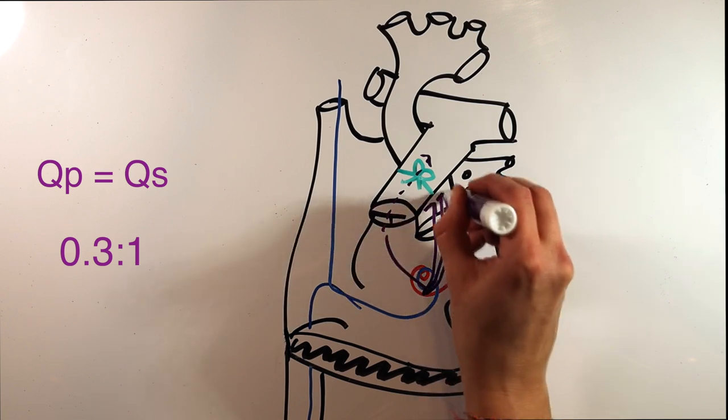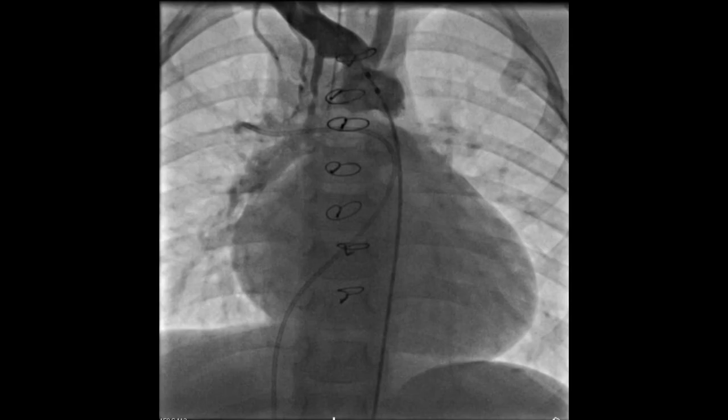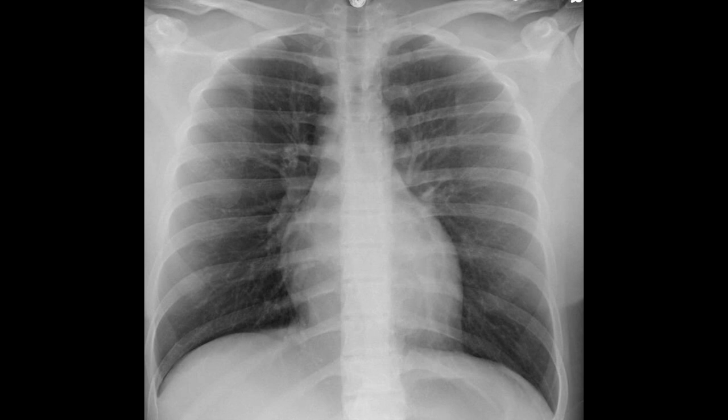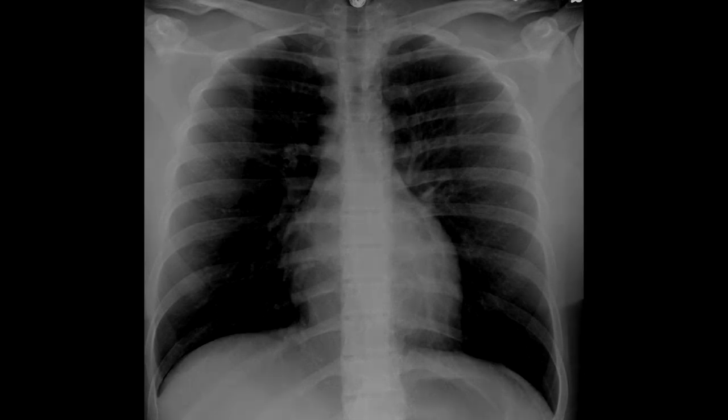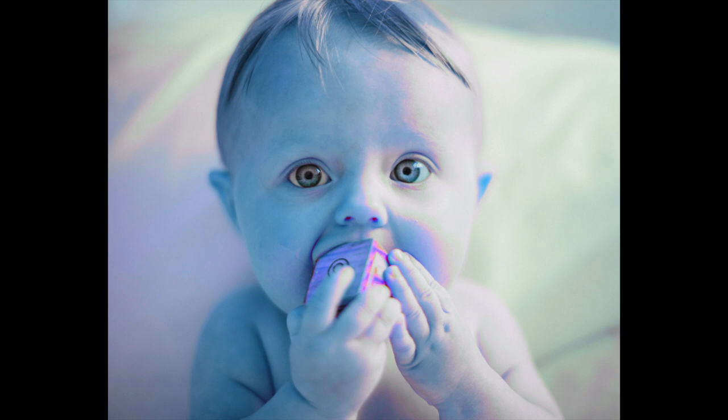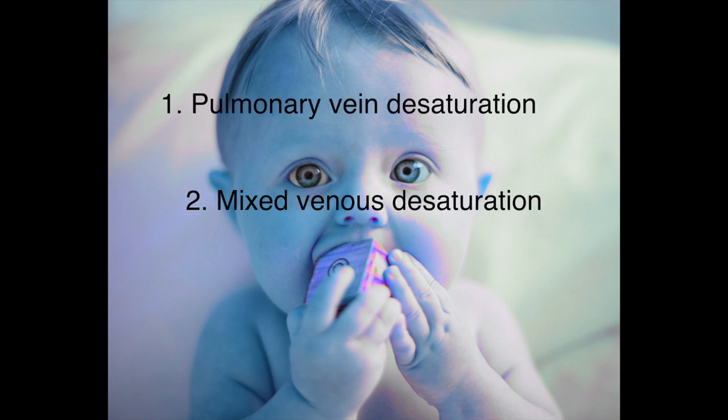How can we tell if low QP to QS is the problem? Maybe their shunt murmur is quieter than it used to be. Another hint is a chest x-ray. A chest x-ray with really dark, clear lungs—we don't see totally clear x-rays much in the cardiac ICU, so I would be worried about a pulmonary blood flow issue. So if you have a blue baby that's too blue, remember three things: pulmonary vein desaturation, mixed venous desaturation, and low QP to QS.